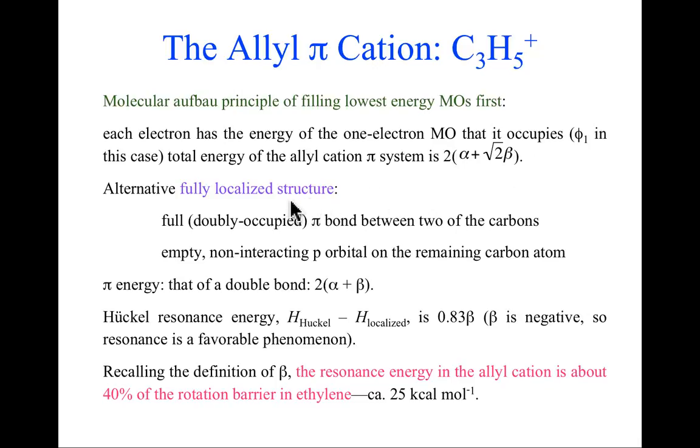Now let me ask a different question. What if I had a fully localized structure? That is, what if I took my two electrons, and I just put them in a pi bond between two of the carbons, and I let the other carbon be a true carbocation? It's got an empty, non-interacting p orbital on the remaining carbon atom. Alright, so there is no delocalization. There's a standard ethylene-like pi bond, and there's a carbocation next door. What would the energy of that be? Well, we've already established what the energy of a pi bond is. It is two times alpha plus beta. That was something we looked at in the last lecture. And what's the energy of an empty p orbital? Well, there's no electron in it, so the energy is zero.